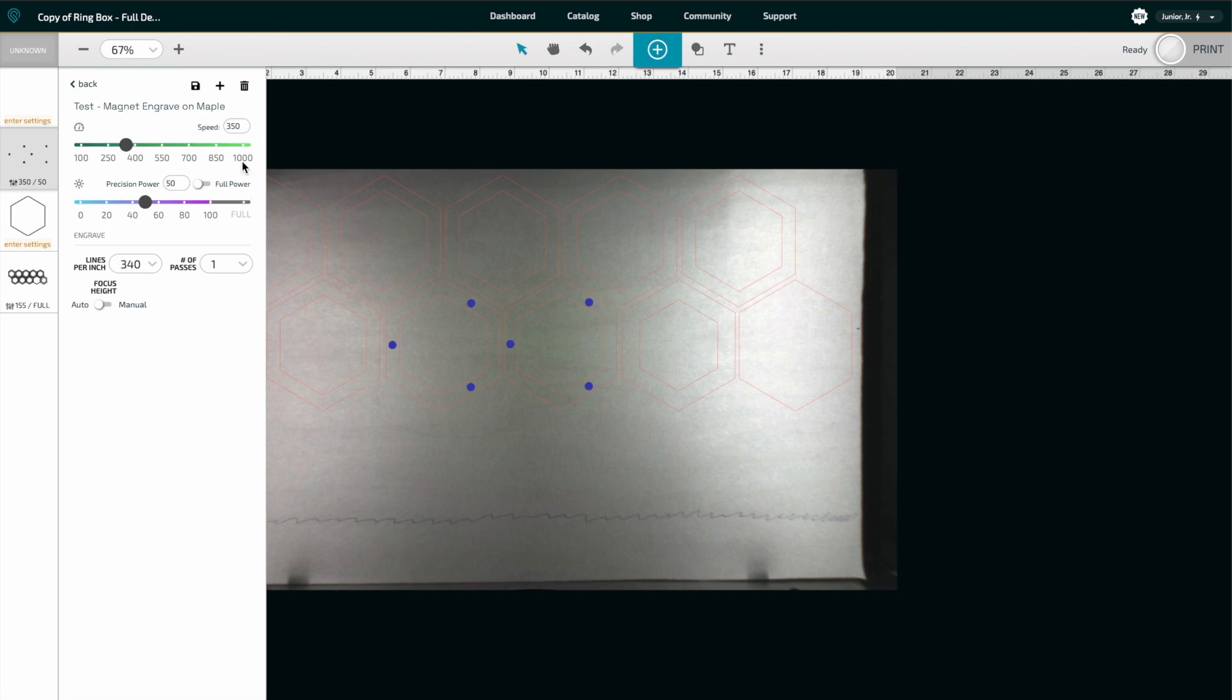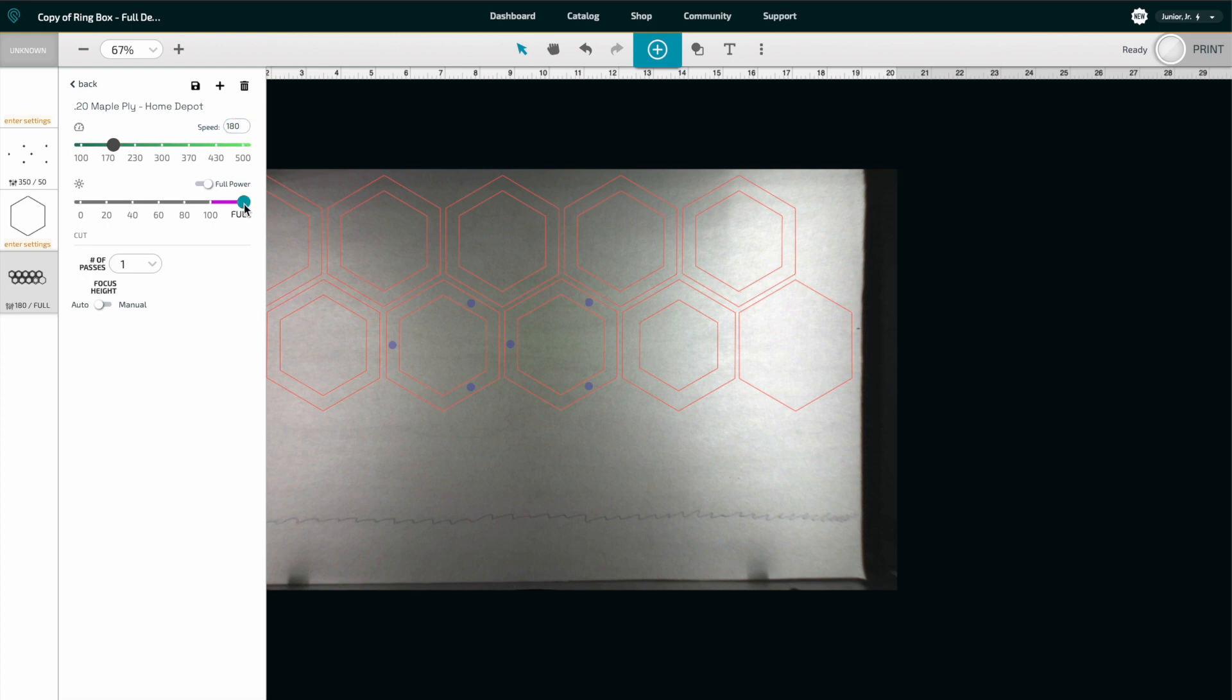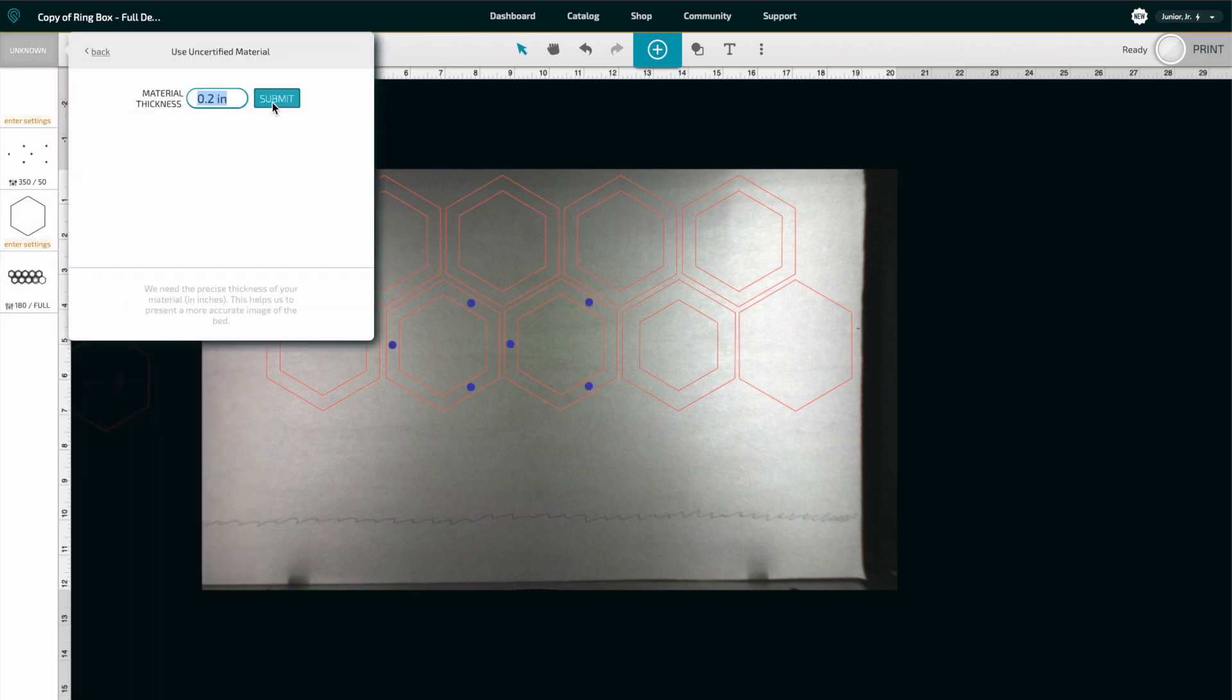For our settings, we have for our speed for the engraving, we have 350, 50 power and 340 LPI. When we go to cut, we have a speed of 180 and full power.